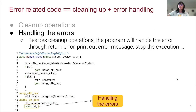The second part of error-related code is the error handling part. The program will handle errors by returning error codes, printing out error messages, stopping the current execution, or using error handling functions like bug, bug_on, or panic.